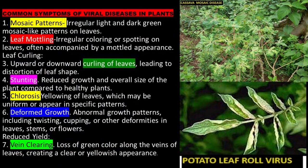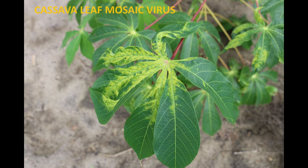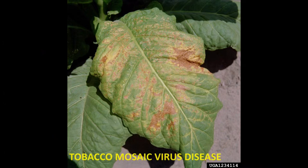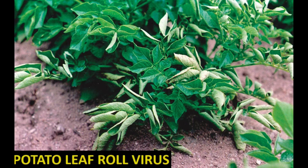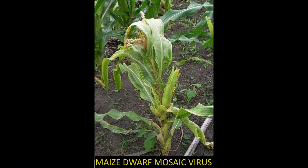Common symptoms of viral diseases in plants include mosaic patterns — irregular light and dark green mosaic-like patterns on leaves — and leaf mottling, which is irregular coloring or spotting on leaves, often accompanied by a mottled appearance. Leaf curling refers to upward or downward curling of leaves, leading to distortion of leaf shape. Stunting involves reduced growth and overall size of the plant compared to healthy plants.